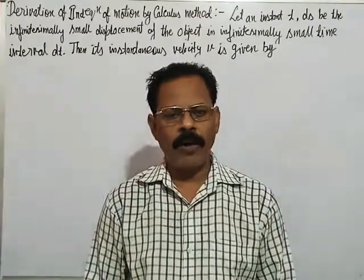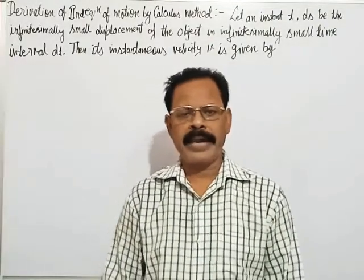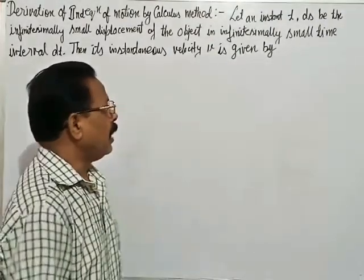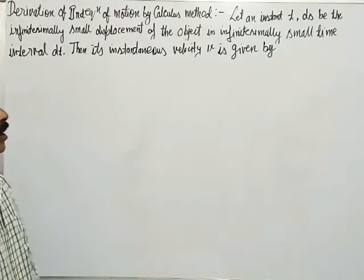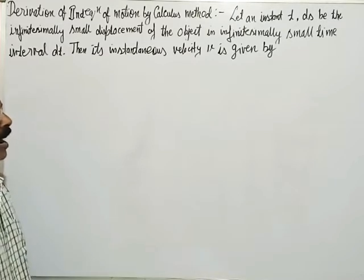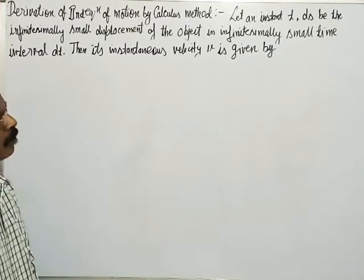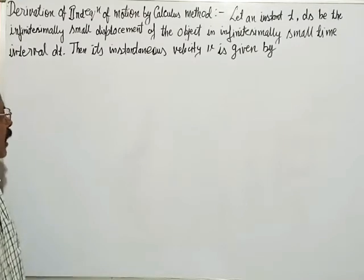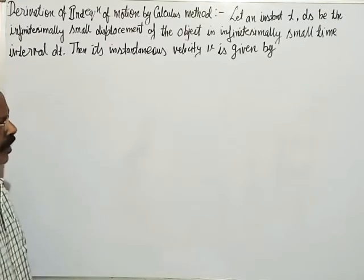See the derivation of the second equation of motion by calculus method. Let at an instant, ds be the infinitesimally small displacement of the object in an infinitesimally small time interval dt. Then its instantaneous velocity v is given by: